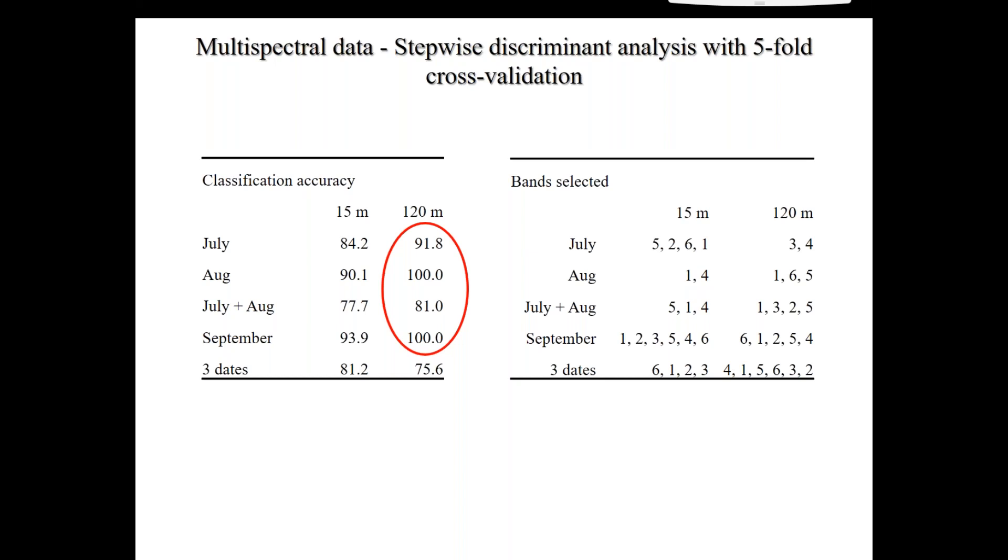So when I did some discriminant analysis on this data, I found some interesting things. The classification accuracy was quite high for the 120 meters compared to the 15 meters. But if you see on the right, we have a list of the bands that were used. These are the bands that were the most accurate in being able to differentiate potassium deficiency. So from July, it was actually using band three and four, which is red in the near-infrared. But then in August, it's saying I can get 100% classification accuracy, but I'm using completely different bands. And again, that happened in September. So there are issues here with extrapolating even just one particular time point with other time points and that sort of thing.